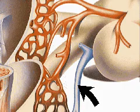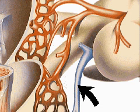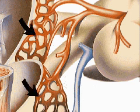Pulmonary arterioles conduct carbon dioxide-rich, oxygen-depleted blood to the alveoli. Blood capillaries form a meshwork around the alveoli. As blood flows through the capillaries, it loses carbon dioxide and takes up oxygen, changing from dark to bright red in color.